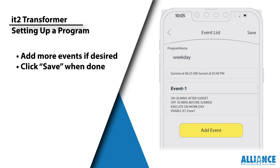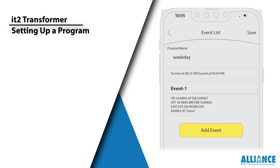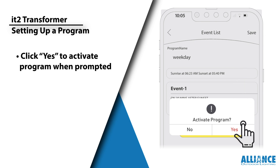You can then save on the next page or add more events if you want multiple on and off times in the program. Once you've finished setting up the program, click save in the top right corner of the event list page. A window will ask you if you want to activate the program — click yes to confirm.